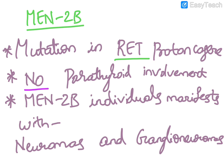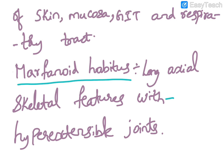MEN2b also occurs due to mutation in the RET proto-oncogene. An important point to remember about MEN2b is that there is no parathyroid involvement. MEN2b individuals manifest with neuromas and ganglioneuromas of the skin, mucosa, GIT, and respiratory tract.